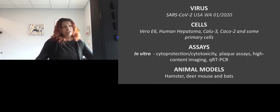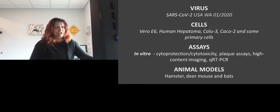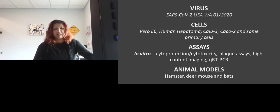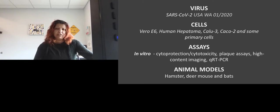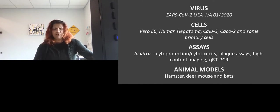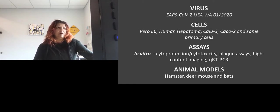For SARS, we are using the Washington strain of SARS-CoV-2. Several cell lines have been used in our assays: Vero, human hepatoma, Calu-3, Caco-2, and some primary cells. Our in vitro assays have included cytoprotection, cytotoxicity, plaque assays, high content imaging using the CellEgo from Nexelom, and QRT-PCR. We also have the capacity, because we are a vet school, to use animal models. My colleagues Dick Bowen and Tony Schounce have been helping with hamster, deer mouse, and bat animal models to test some of these antivirals.